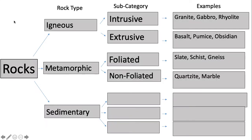So we have foliated and non-foliated with examples of each. Foliated examples are slate, schist, and gneiss. Non-foliated examples are quartzite and marble.